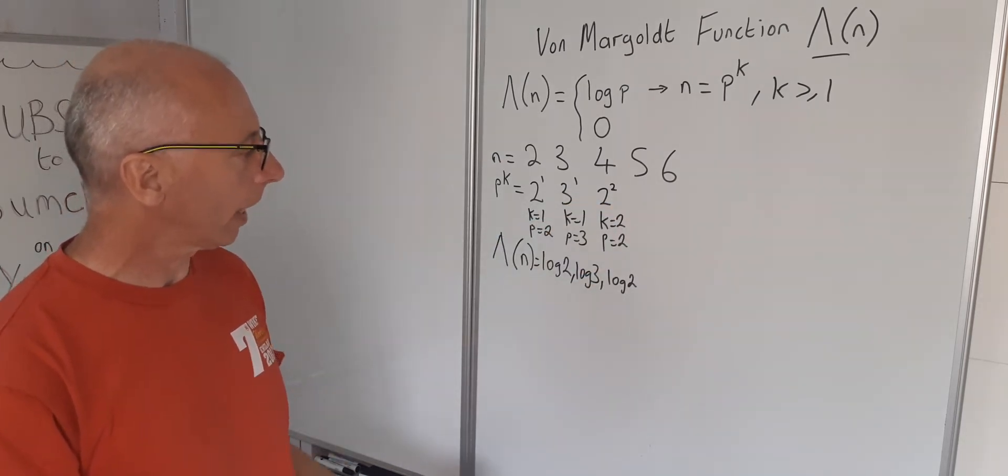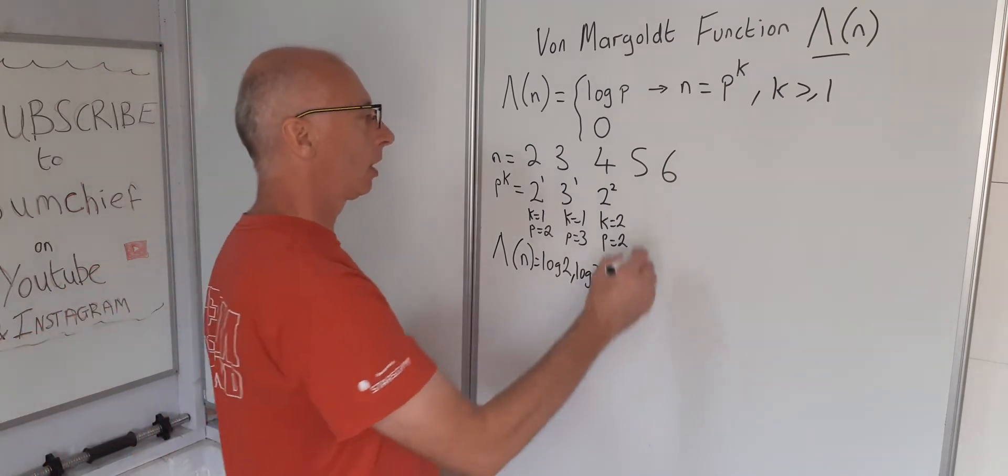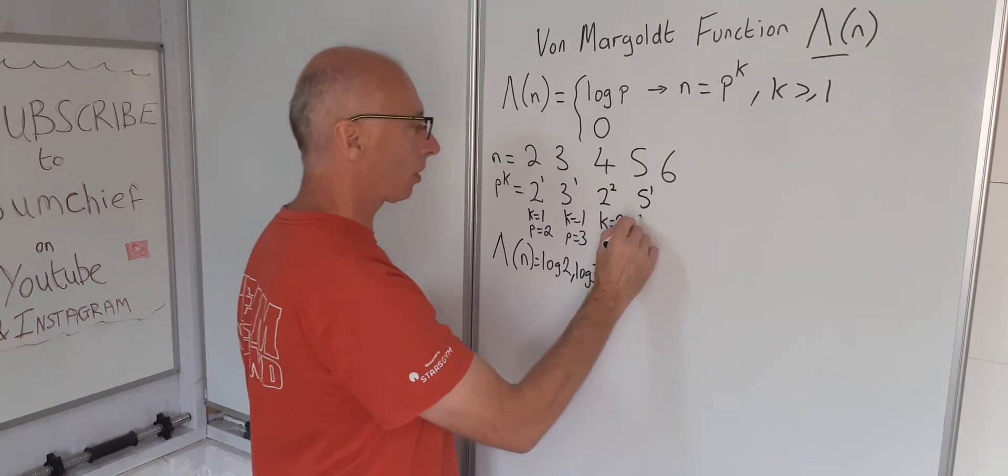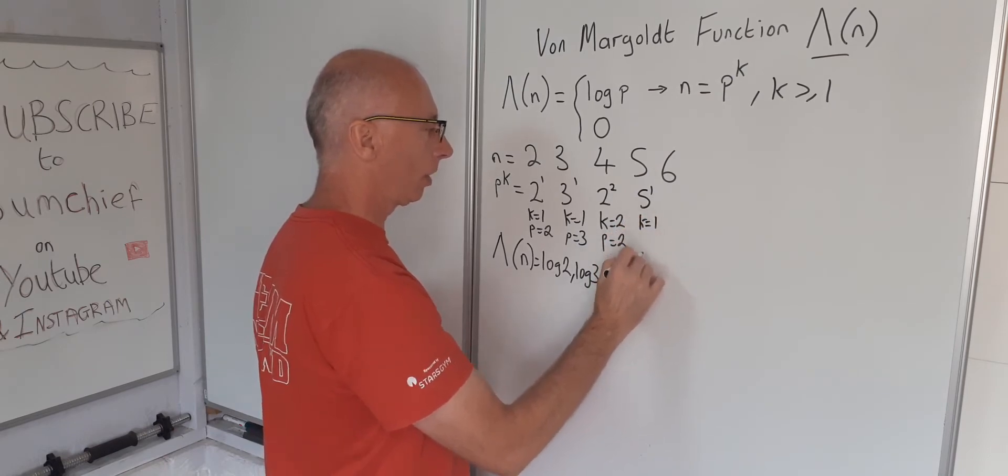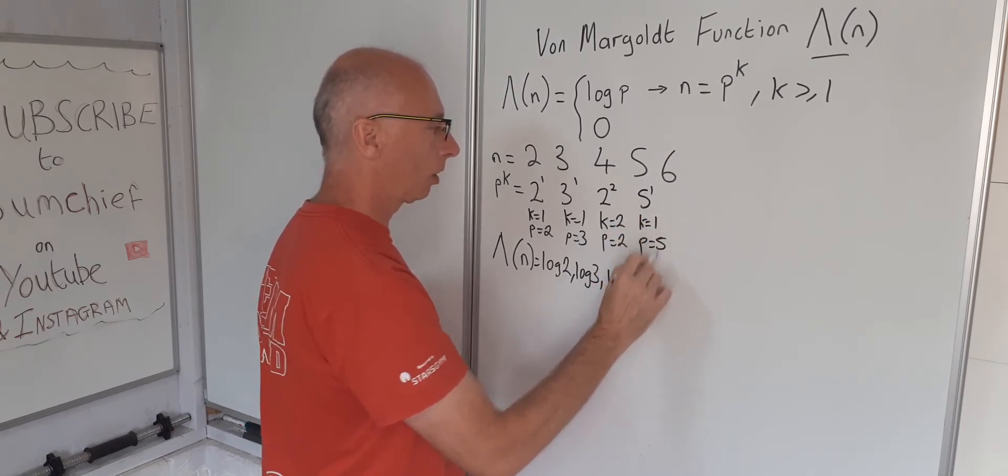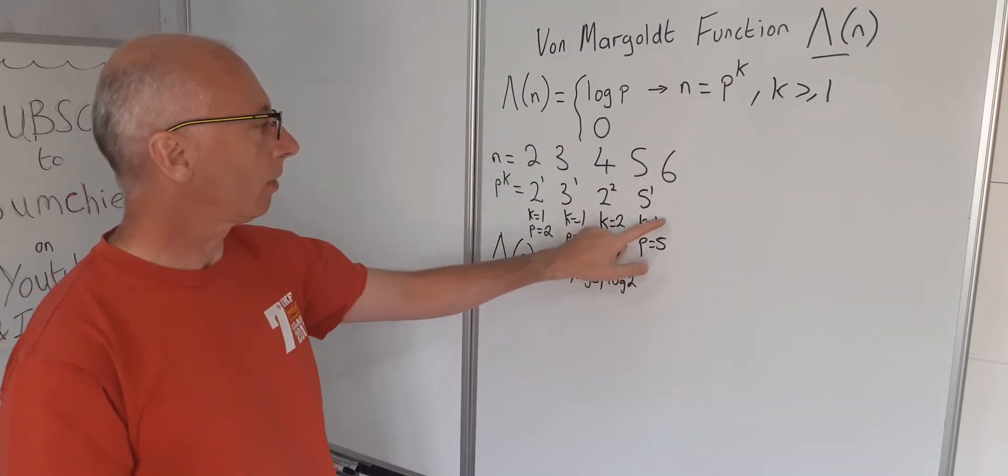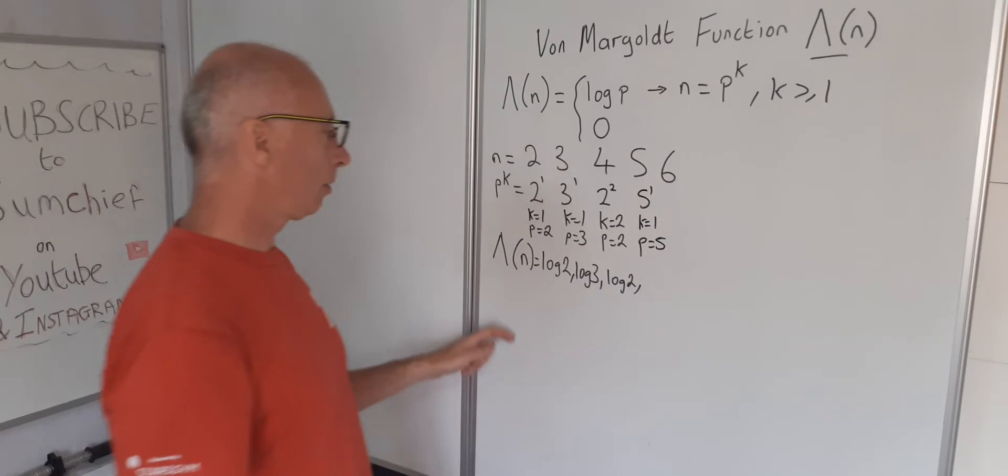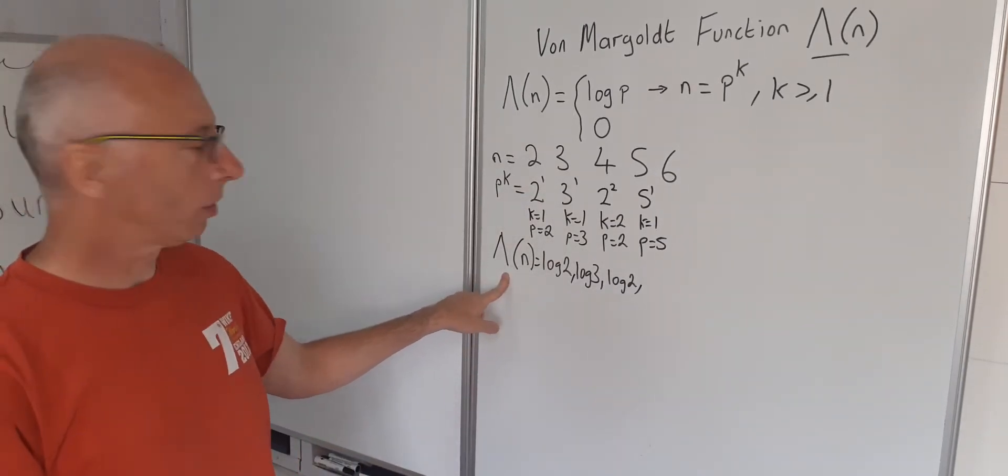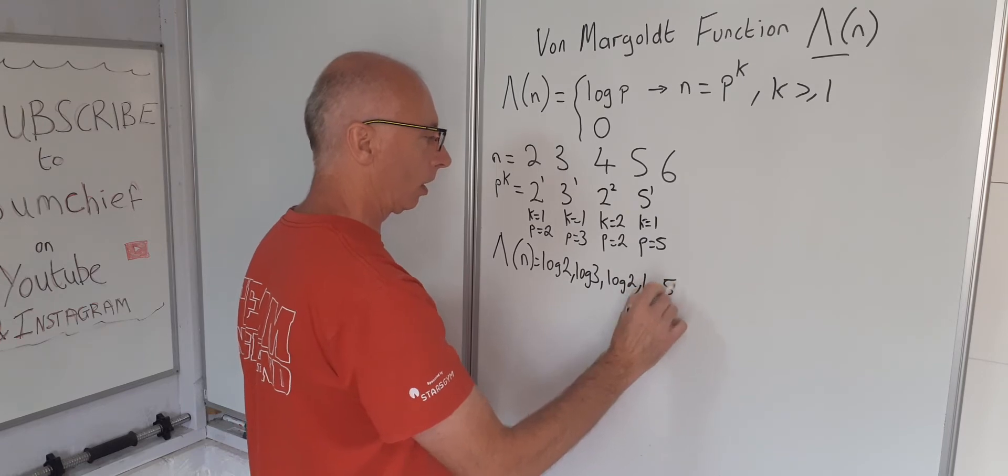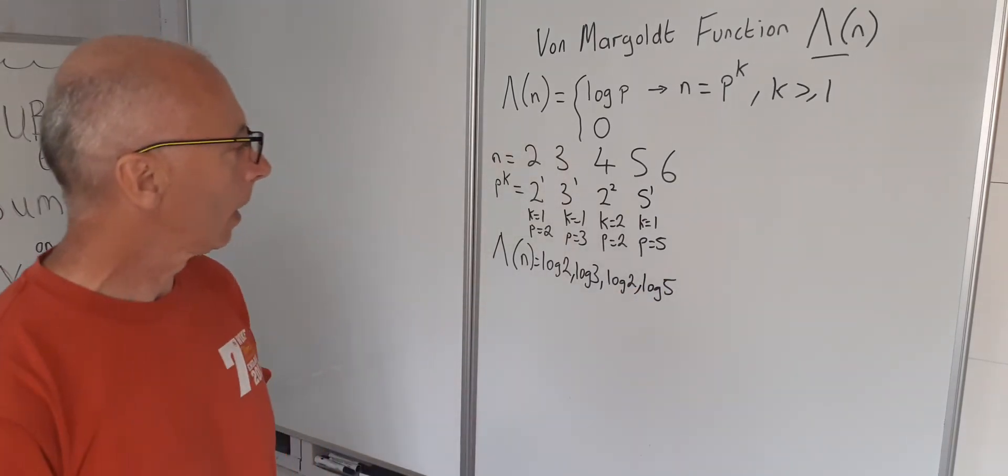The number five. Again, five is a prime number, so we can say five to the power of one. So that will give us K equals one, and the prime number will be five. So i.e. P to the K, five to the power of one. So in this instance the von Mangoldt Function for the value five will give us log of five. Okay.